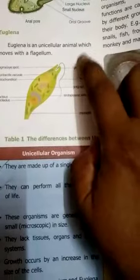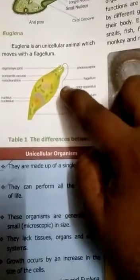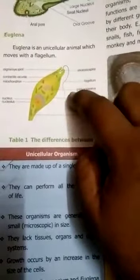The next unicellular organism is euglena. Euglena is also a single-celled organism. It moves from one place to another with the help of a long hair-like structure called a flagellum.